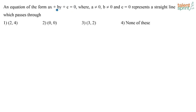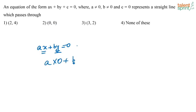An equation of the form AX plus BY plus C equals 0, where A is not equal to 0, B is not equal to 0, and C equals 0, represents a straight line passing through which point? Since C equals 0, we have AX plus BY equals 0. Substituting option 2, x=0 and y=0: A×0 plus B×0 equals 0. So the line definitely passes through the origin (0, 0), making option 2 the correct answer.